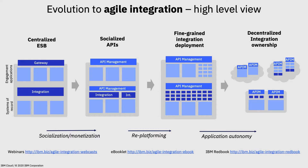Most organizations are probably somewhere between stage one and two. Some are exploring containerization in applications and latterly in integrations. Very few are wholeheartedly at column four, but some are certainly moving in that direction. We'll likely see customers reaching a blend of column three and four over the next few years — this is very much a future-looking objective, not necessarily where customers are today.